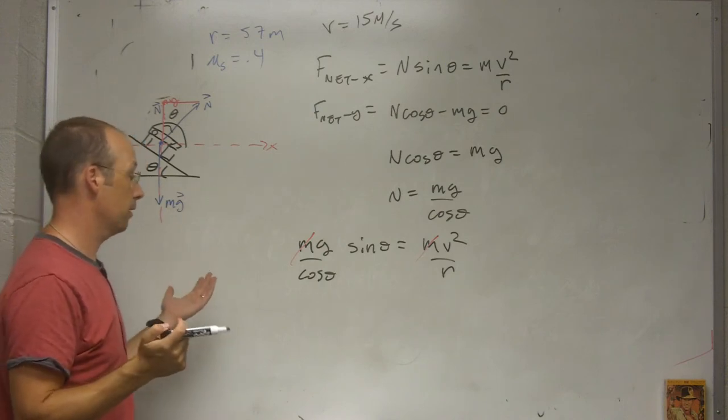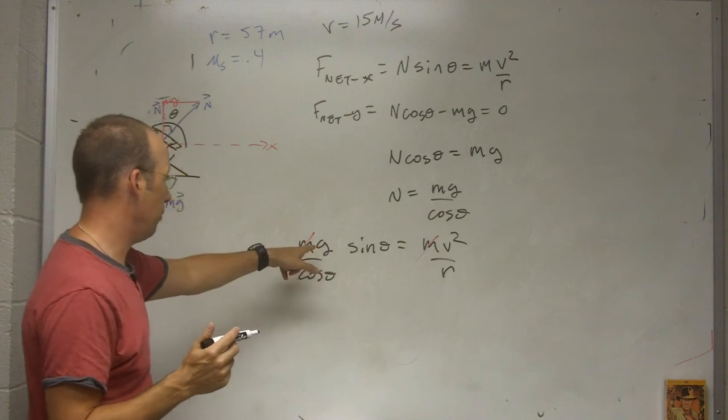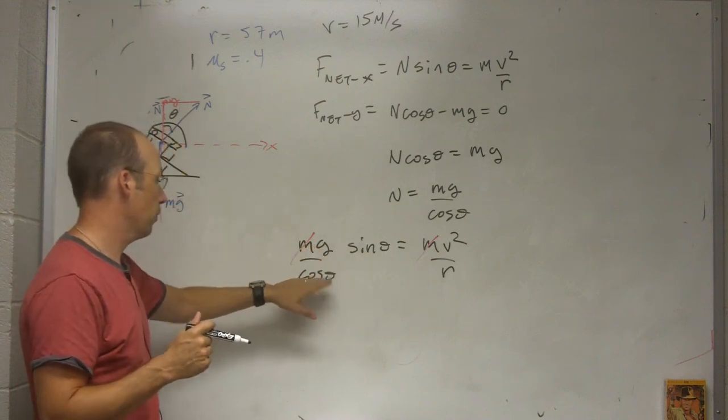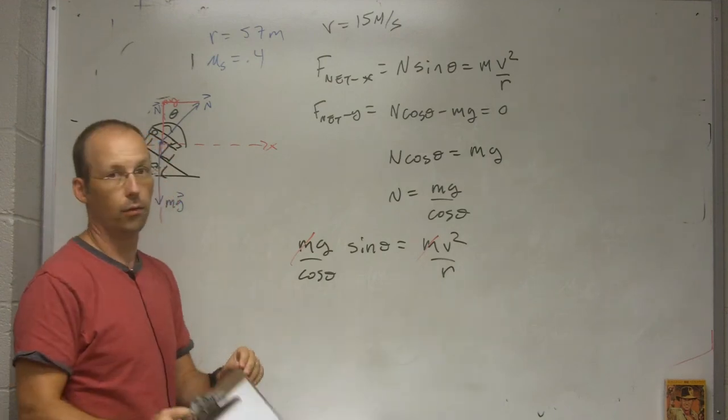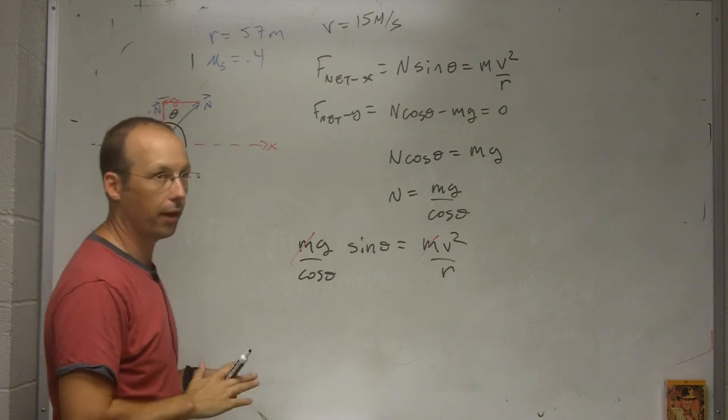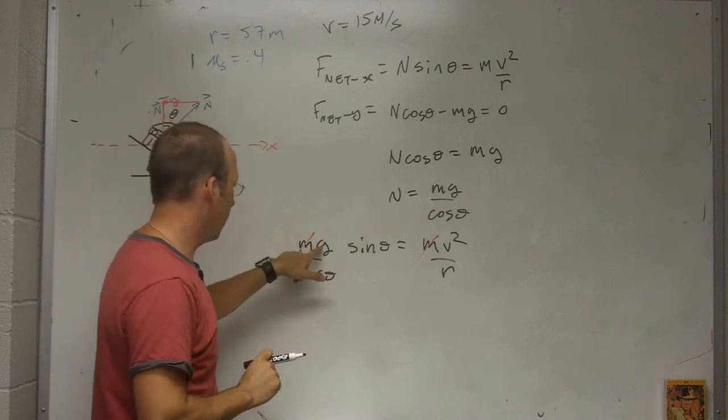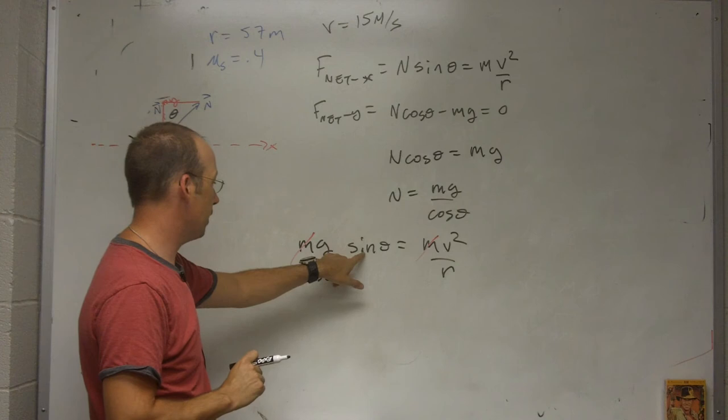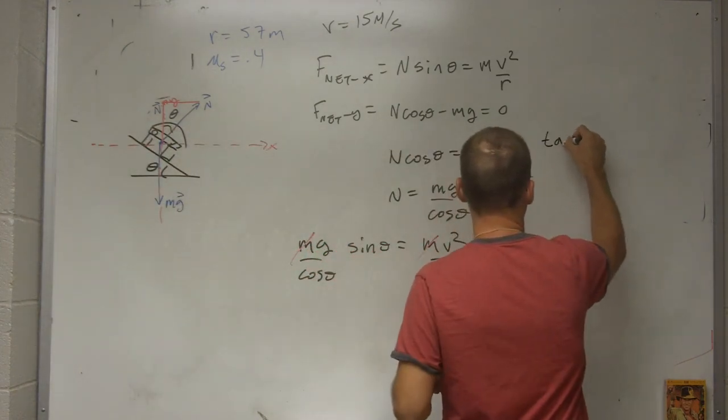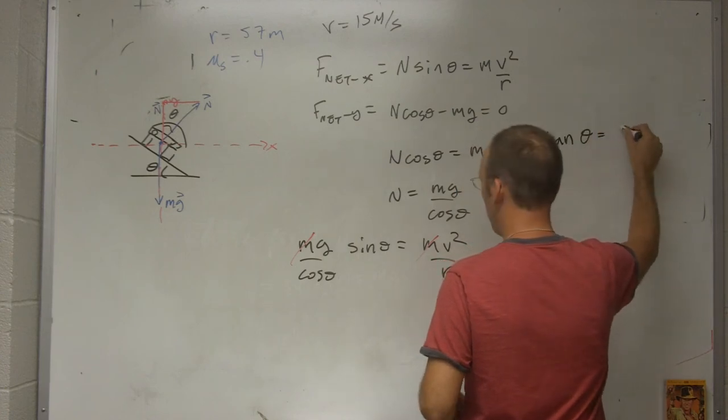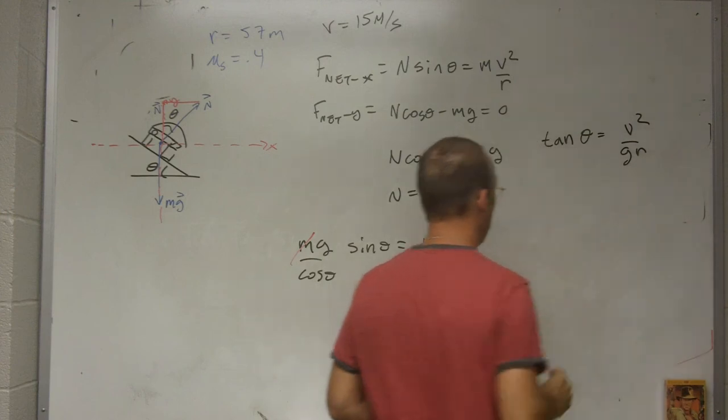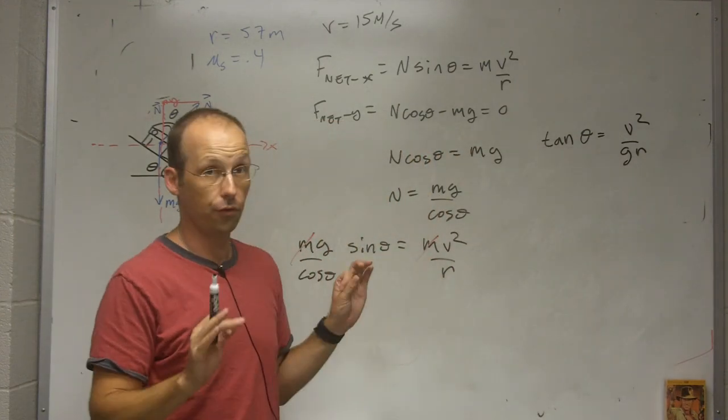So I'm trying to solve for theta. So I can divide both sides by g. And I have sine, well, you could pause right here. You solve for theta. Why am I doing that? Okay. You did it. Let's see if you did it right. So I can divide both sides by g. Sine theta over cosine theta is tangent theta. So I have tangent theta equals v squared over gr.